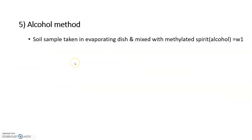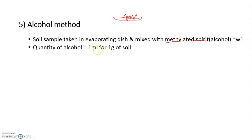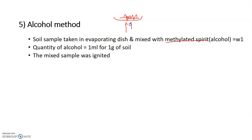The Alcohol method involves mixing the soil with methylated spirit alcohol. We add 1 ml of alcohol for every 1 gram of soil, mix it thoroughly, and then heat it. As the alcohol burns, the water content is evaporated from the sample, reducing the weight.